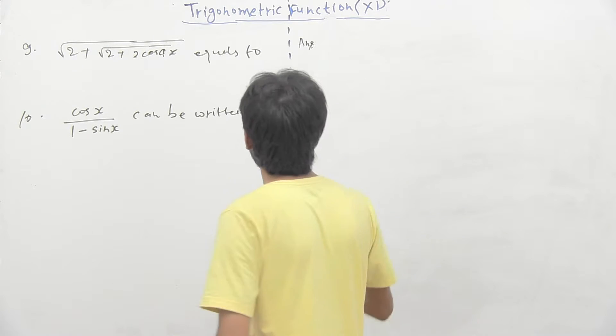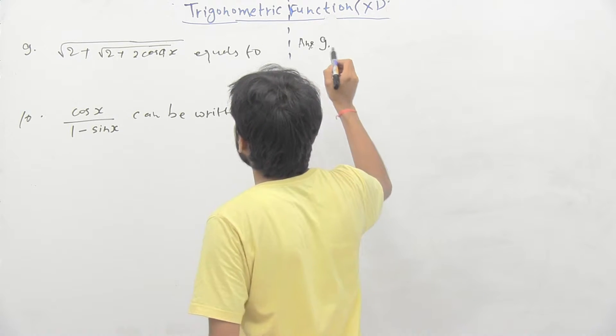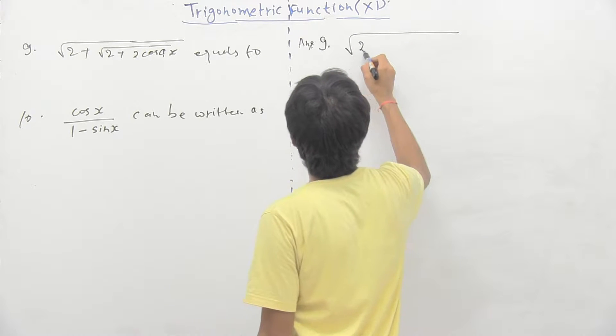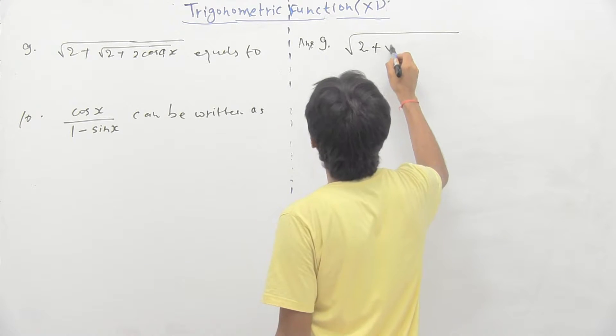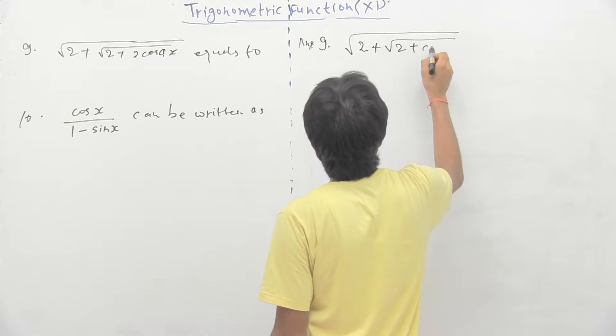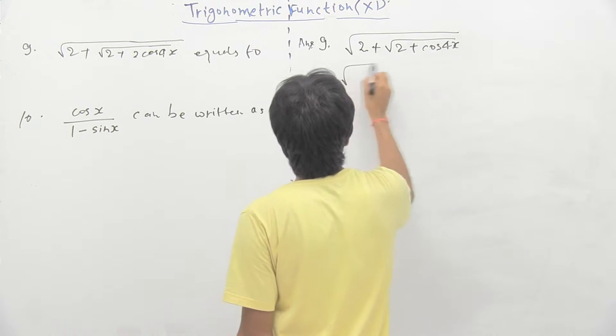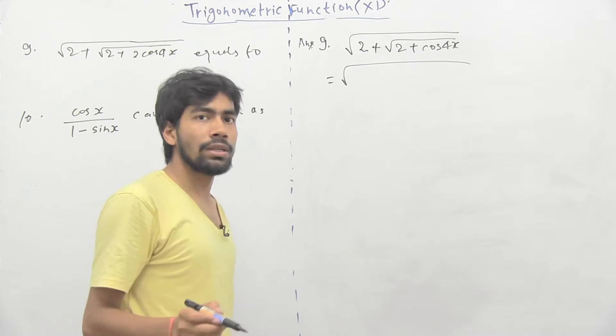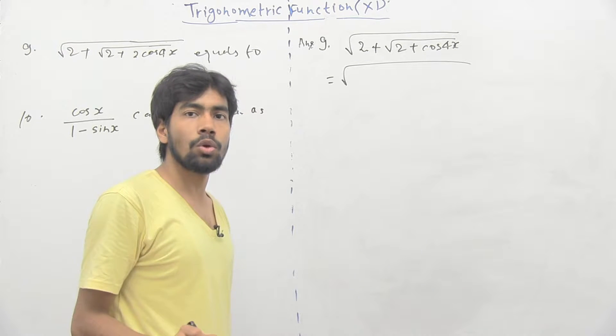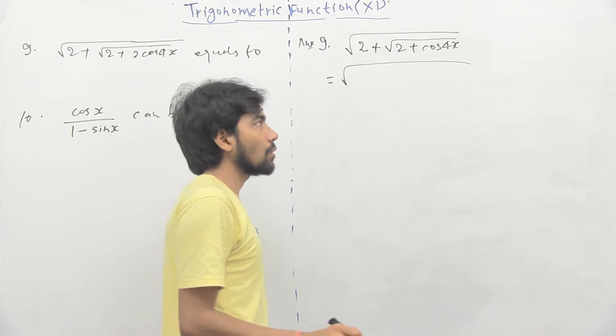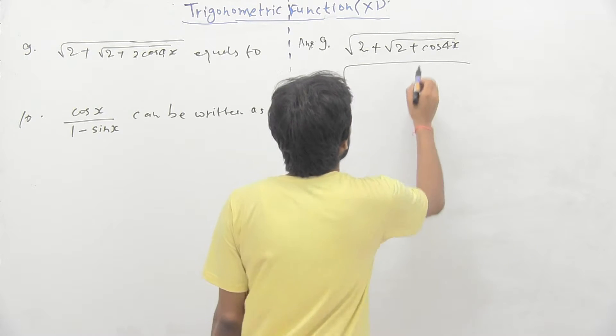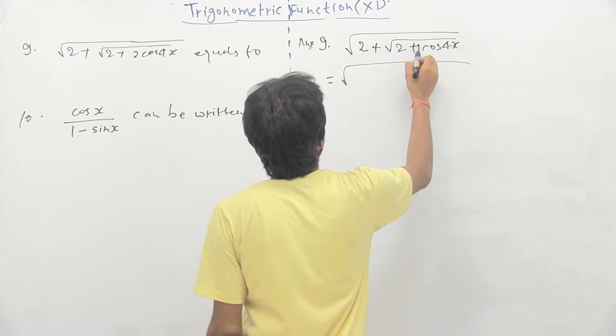Now, see question number 9. Here it is given, we have to find the value of root of 2 plus root of 2 plus cos 4x. Sorry, here it is 2 cos 4x.